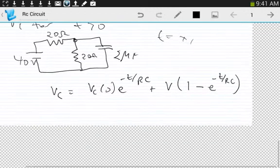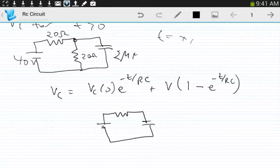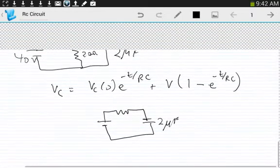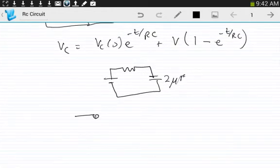VC is equal to VC zero E to the negative T over RC plus V one minus E to the negative T over RC. And again, that's going to be for a circuit that looks like this. So, we solved this already, but I guess just to do it again, we get the Thevenin equivalent resistance and voltage.